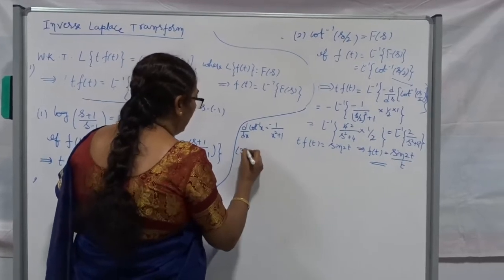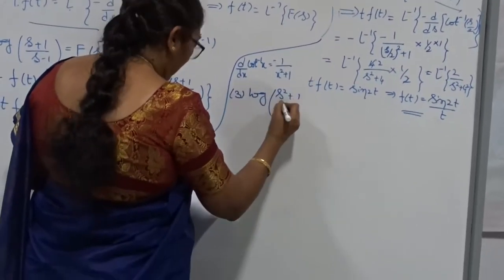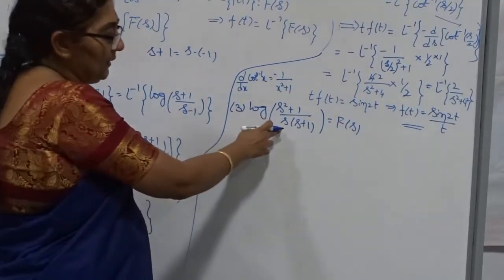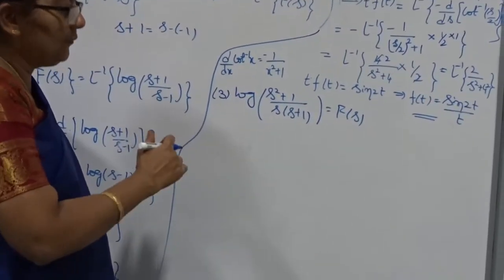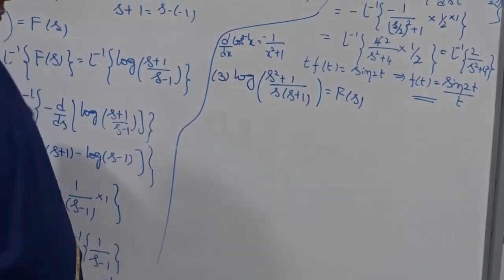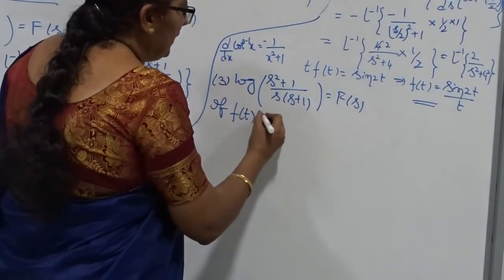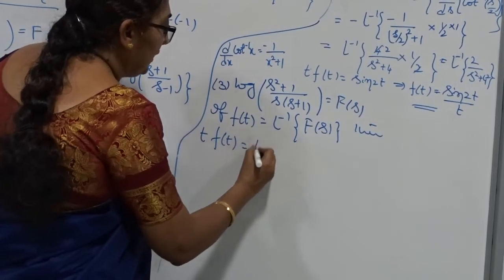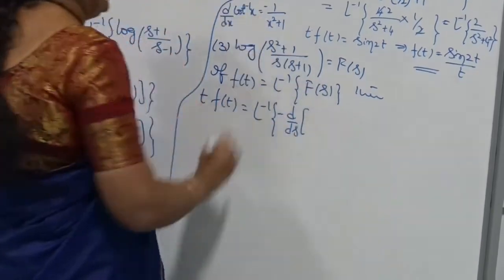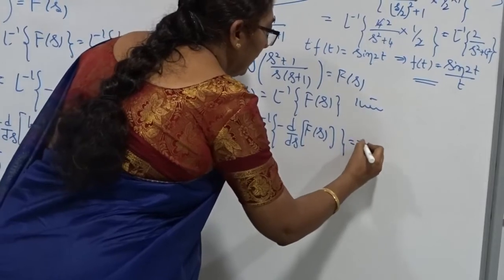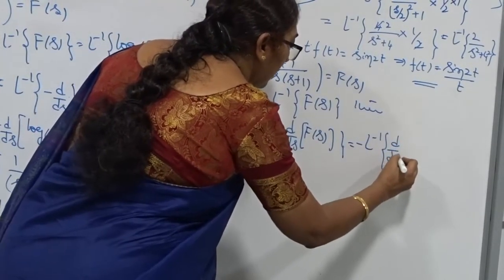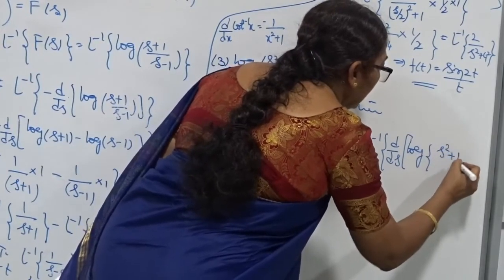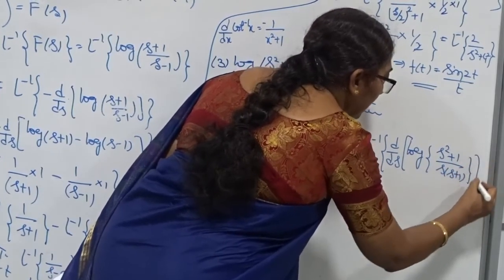Now observe the third problem. Find the inverse Laplace transform of log((s²+1)/(s(s+1))). This is F(s). Once you need the inverse transform and you have a log, once you remove the log it becomes a standard form, so I go for t·f(t) formula. Therefore, if f(t) = L⁻¹ of F(s), then t·f(t) = L⁻¹ of −d/ds of F(s), where F(s) = log((s²+1)/(s(s+1))). Don't find the derivative directly — first expand this.